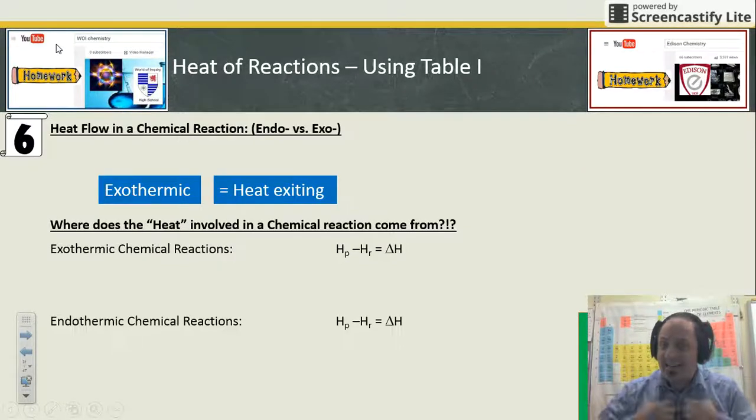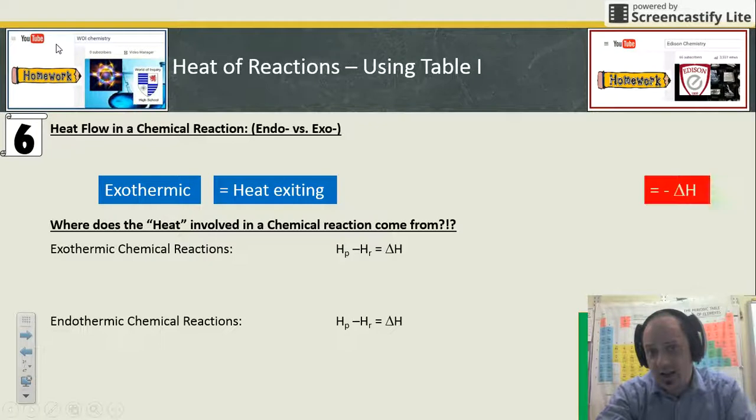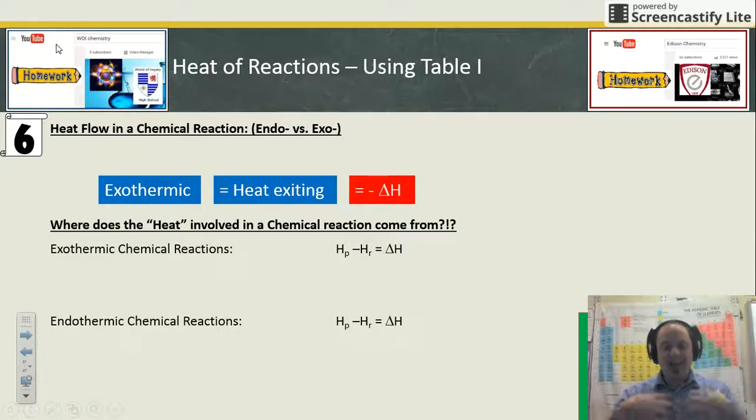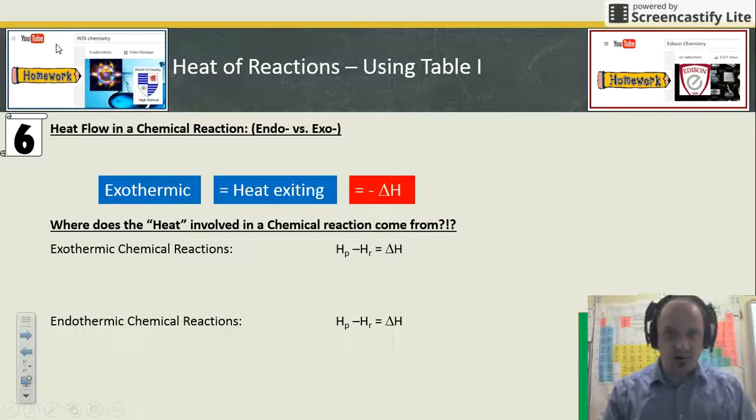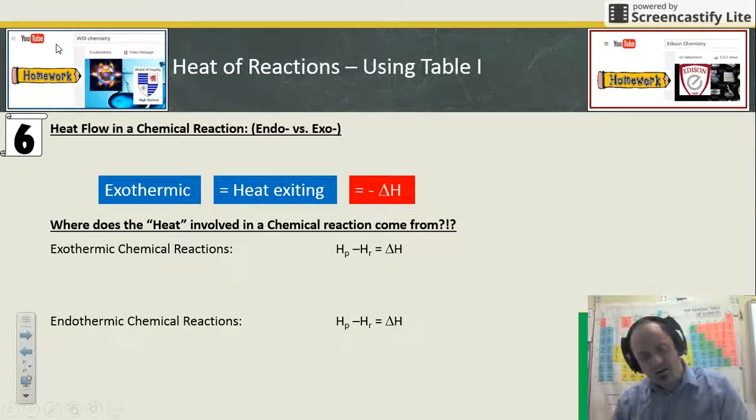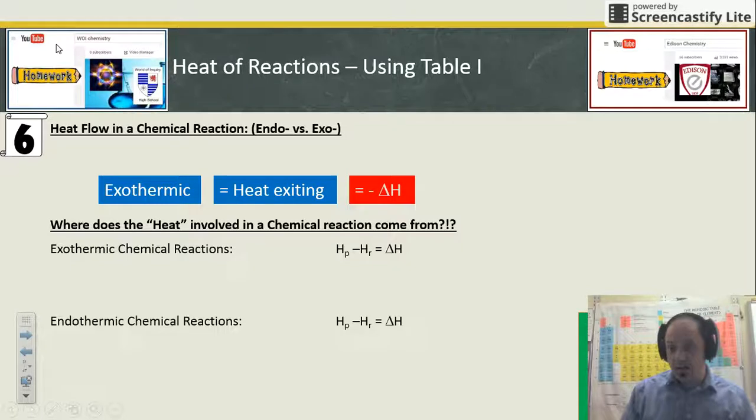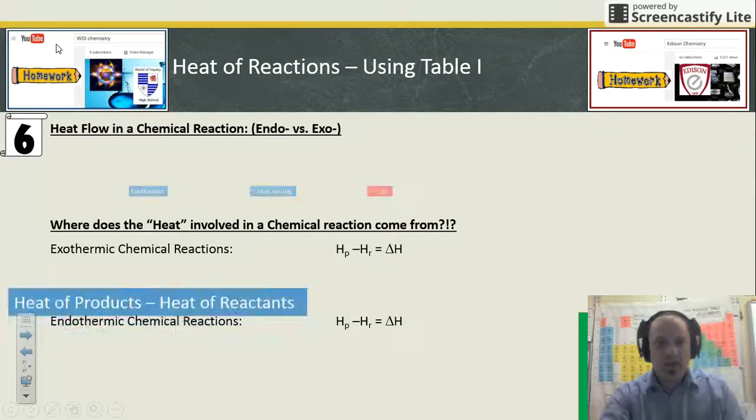Exothermic reactions: that is heat leaving the system, and therefore the delta H value would be negative. If I have less heat now than I did a little while ago, my heat has left me, my delta H value would be negative. The same is true for chemical reactions. If they release or produce heat, their delta H is negative. If they absorb or consume heat as a reactant, their delta H is positive.